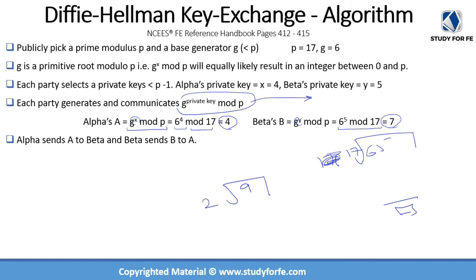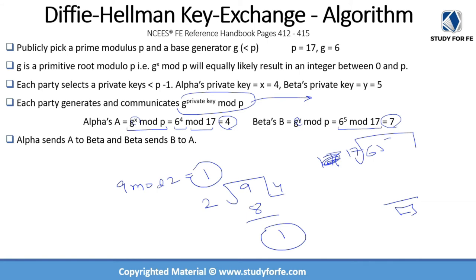You don't want to be performing these mod calculations by hand on the exam. I recommend you spend a couple of minutes finding out how to calculate the mod operation on your calculator. I've already verified it on the Casio fx-115ES, and the Texas Instruments and HP calculators approved by NCEES will have this functionality as well.